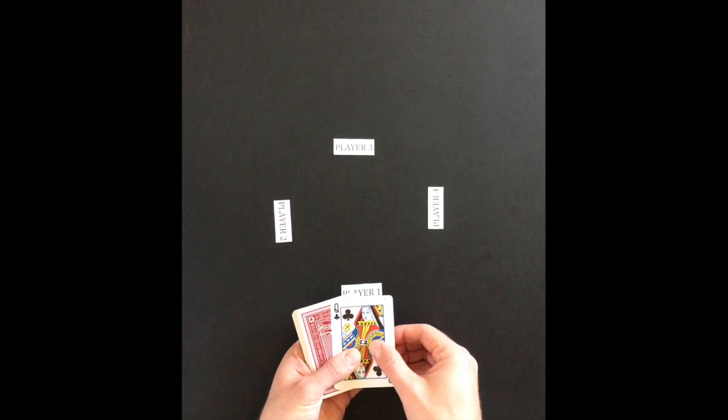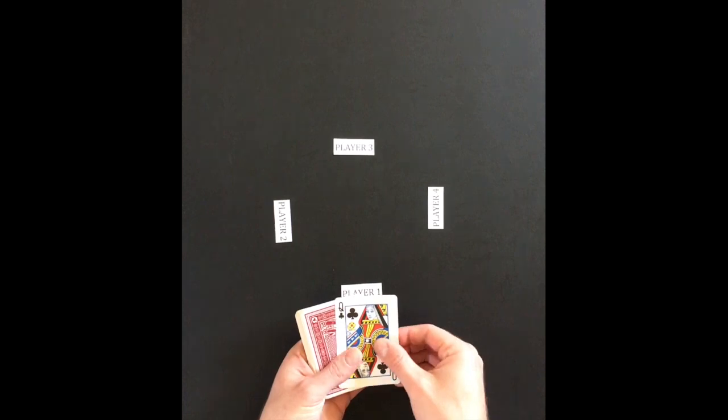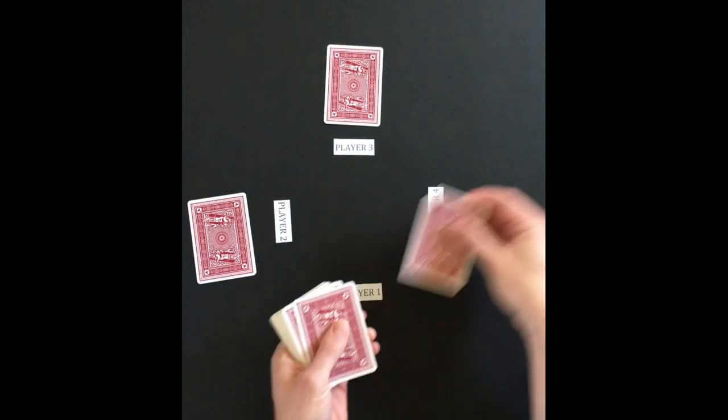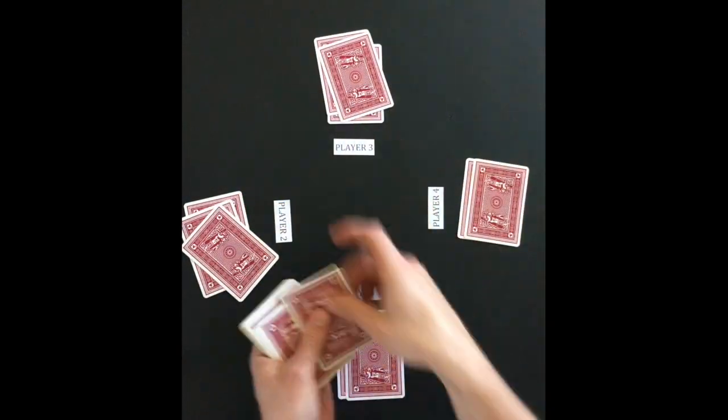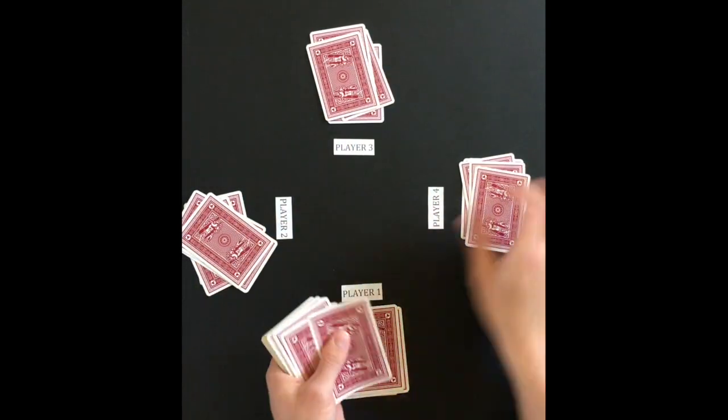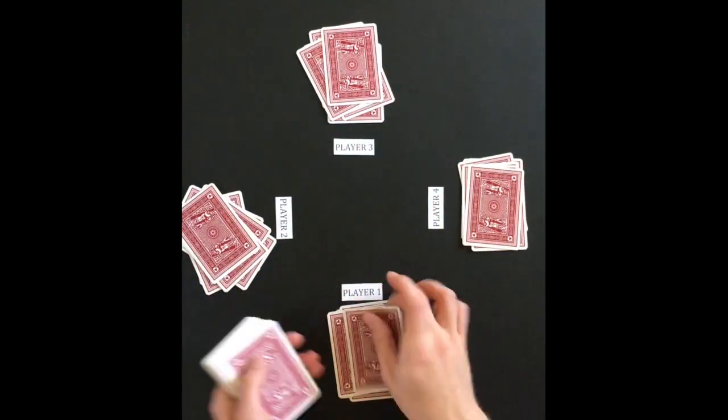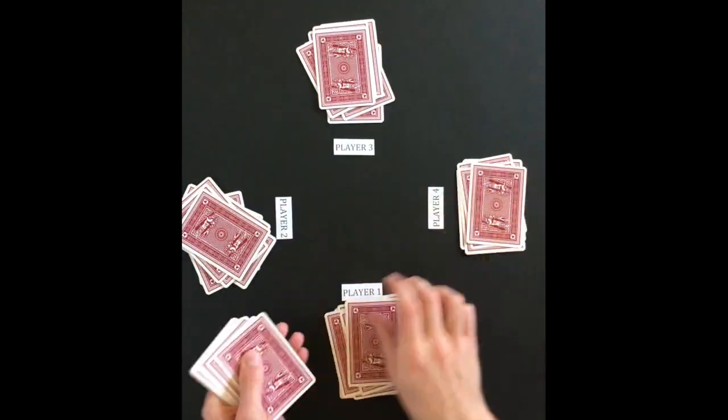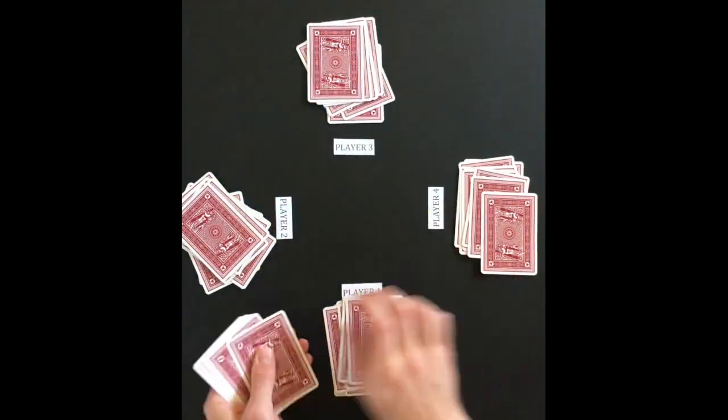The card game is played with a standard 52 card deck with one of the queens taken out so that only 51 cards remain. The 51 cards are dealt out one at a time until all cards have been dealt. It is okay for some players to have more cards than others.